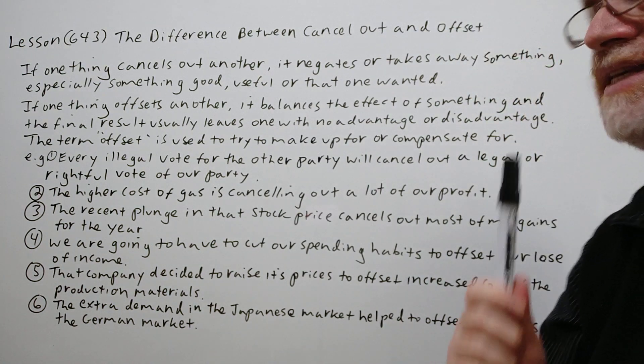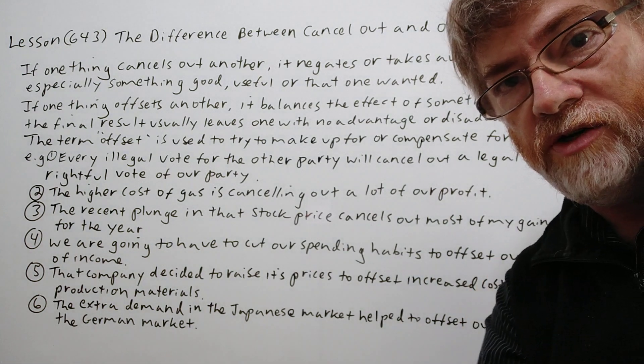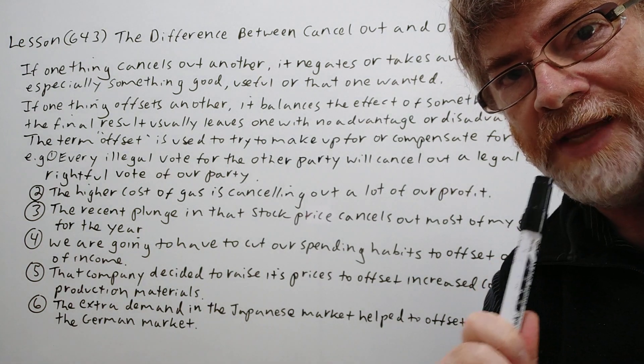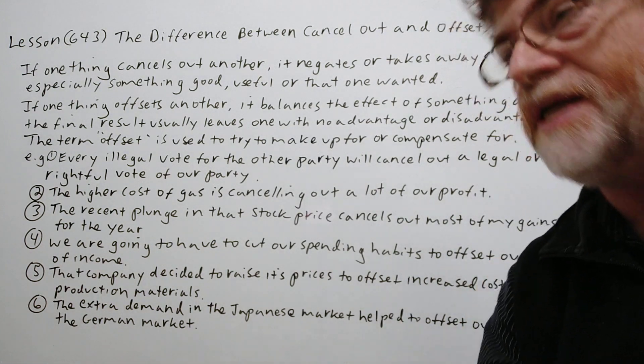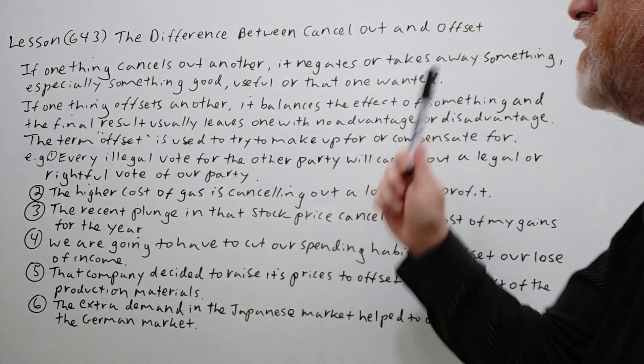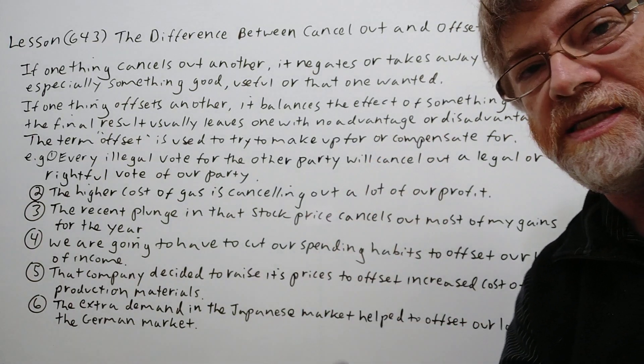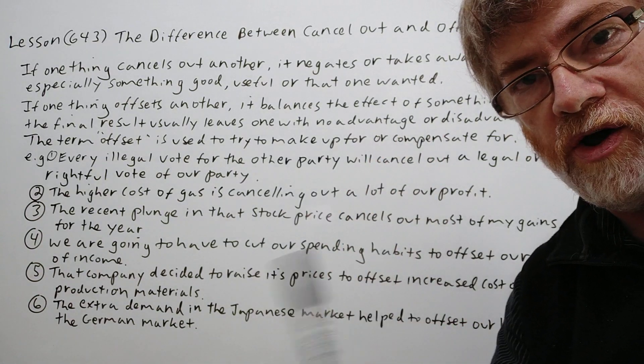Hi, this is Tutor Nick P and this is Lesson 643. The title of today's lesson is the difference between 'cancel out' and 'offset'.